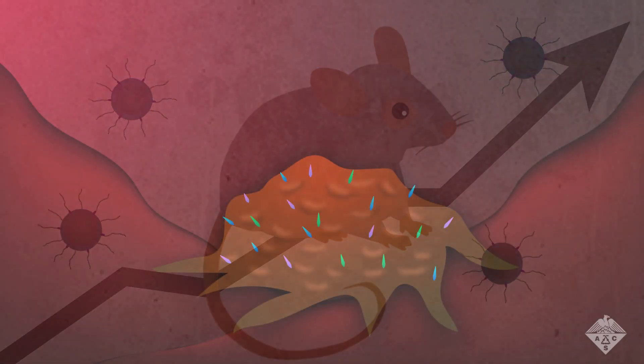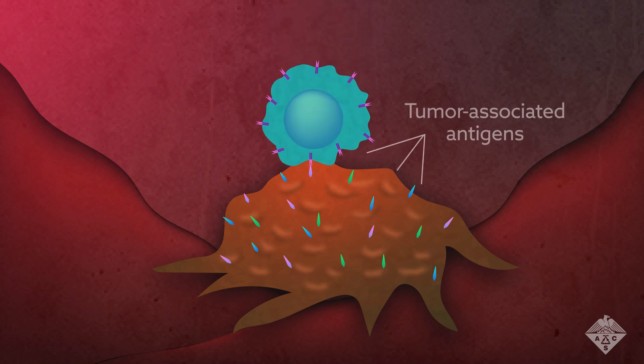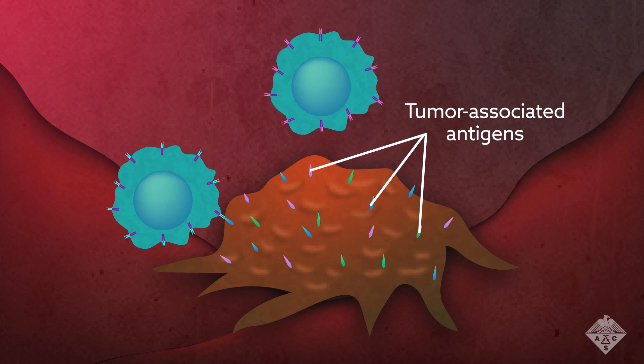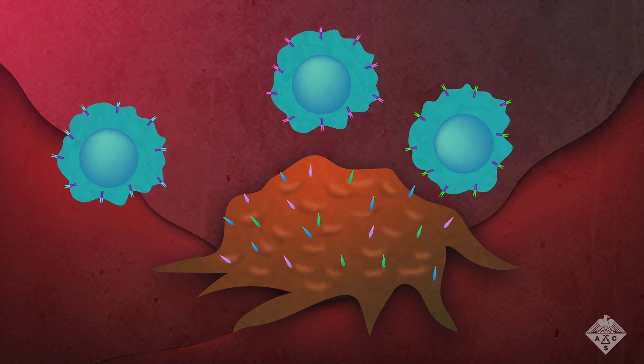Immunotherapies turn immune cells into cancer hunters by training them on substances known as tumor-associated antigens. Like the scent of prey, these antigens are unique to different cancers.